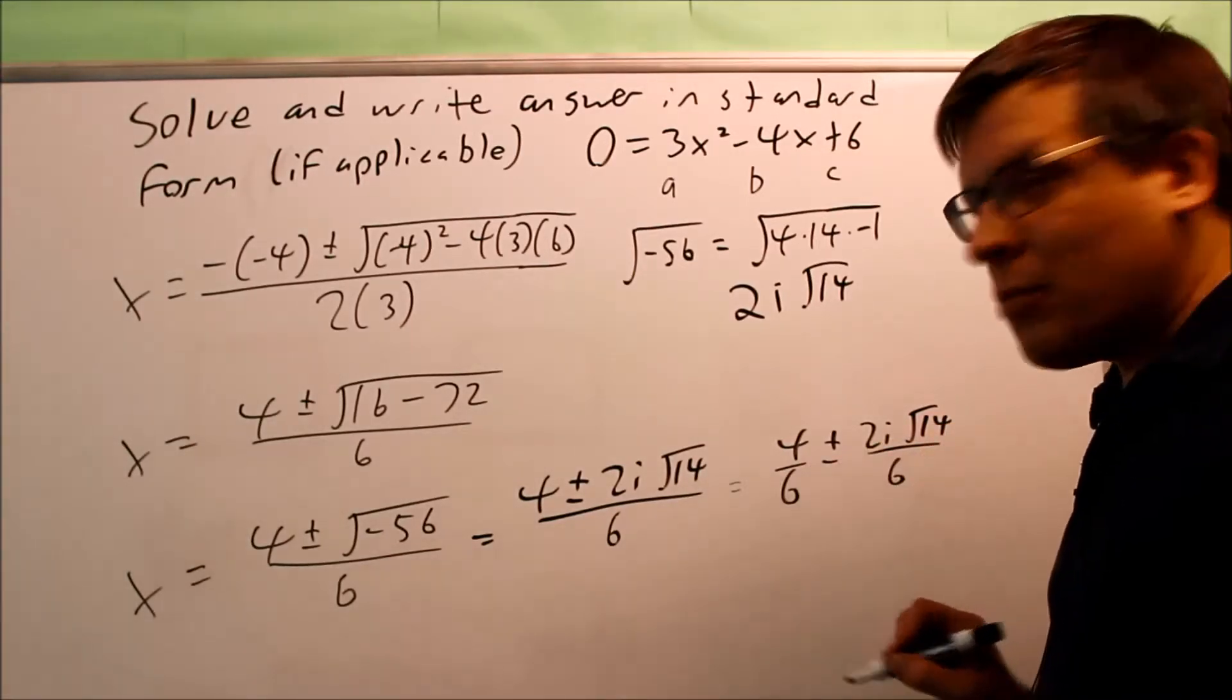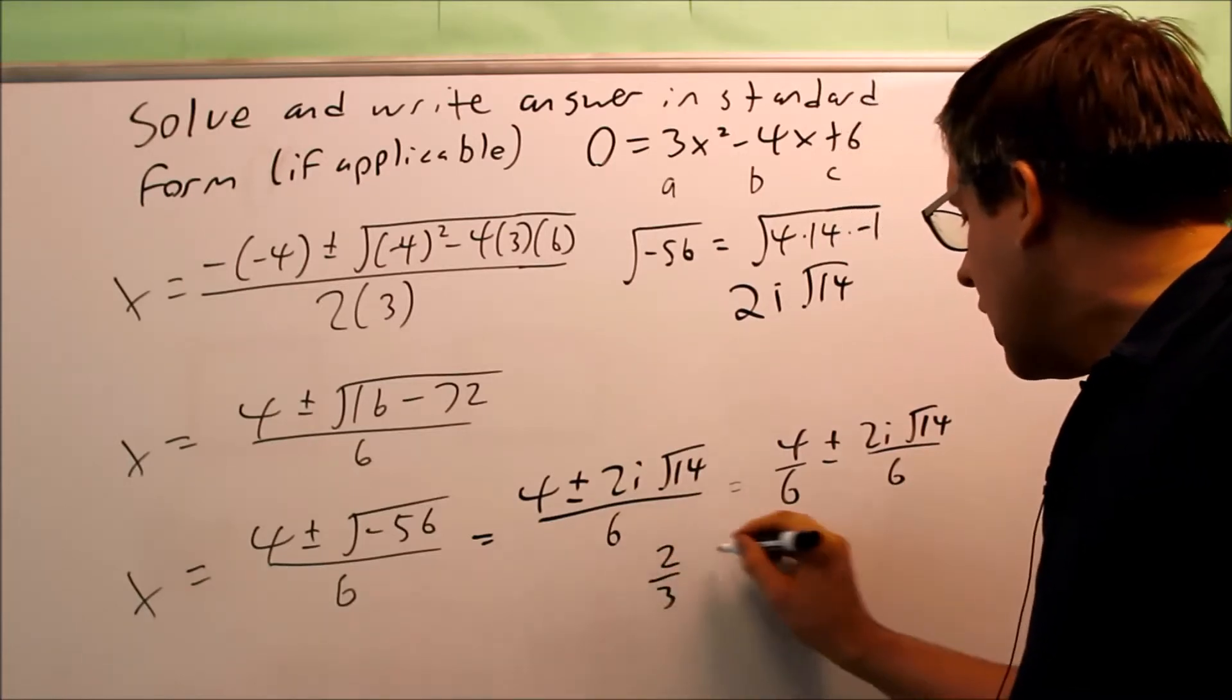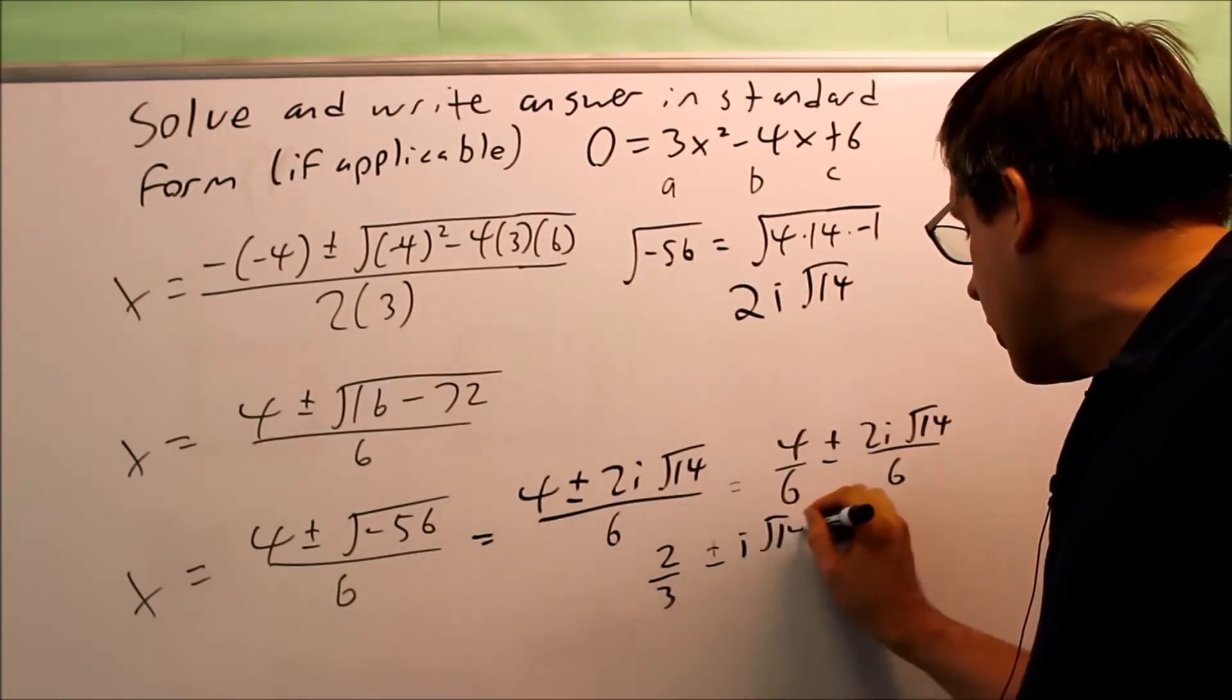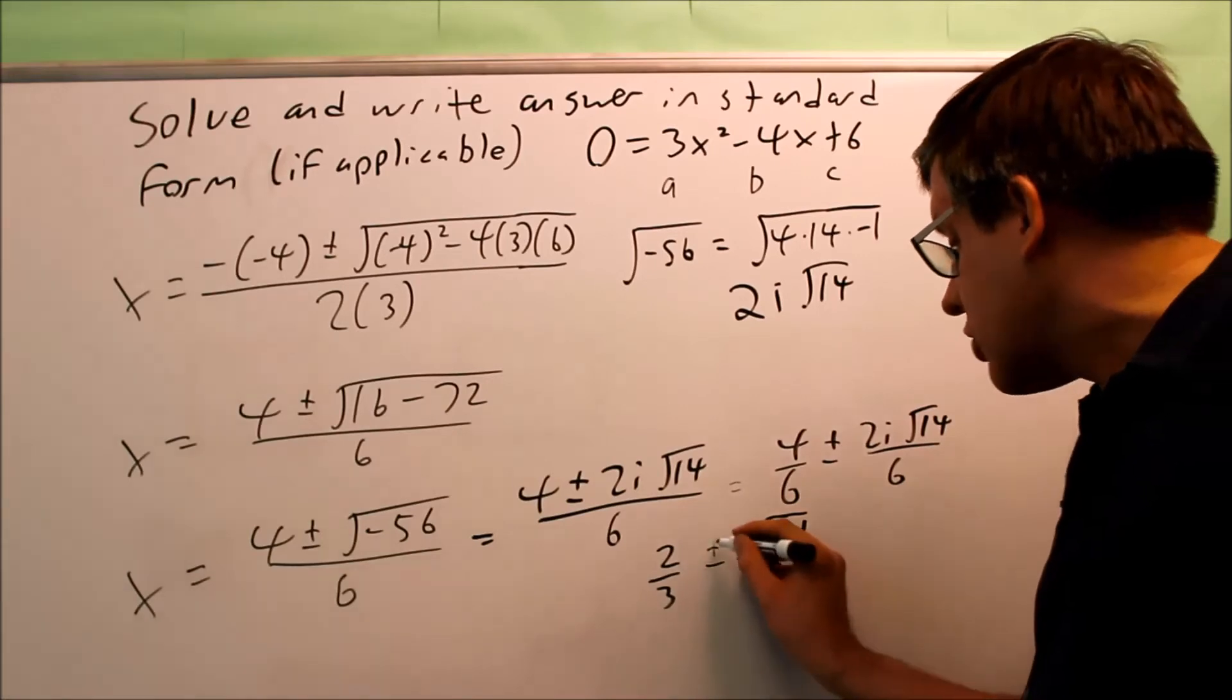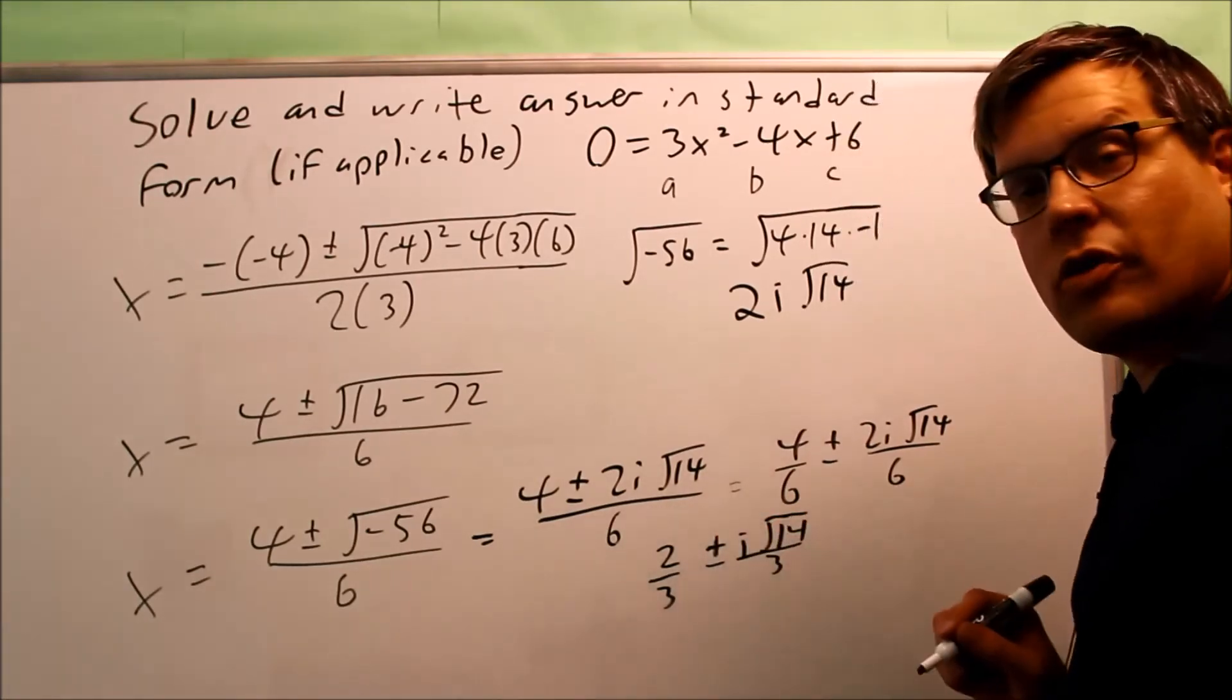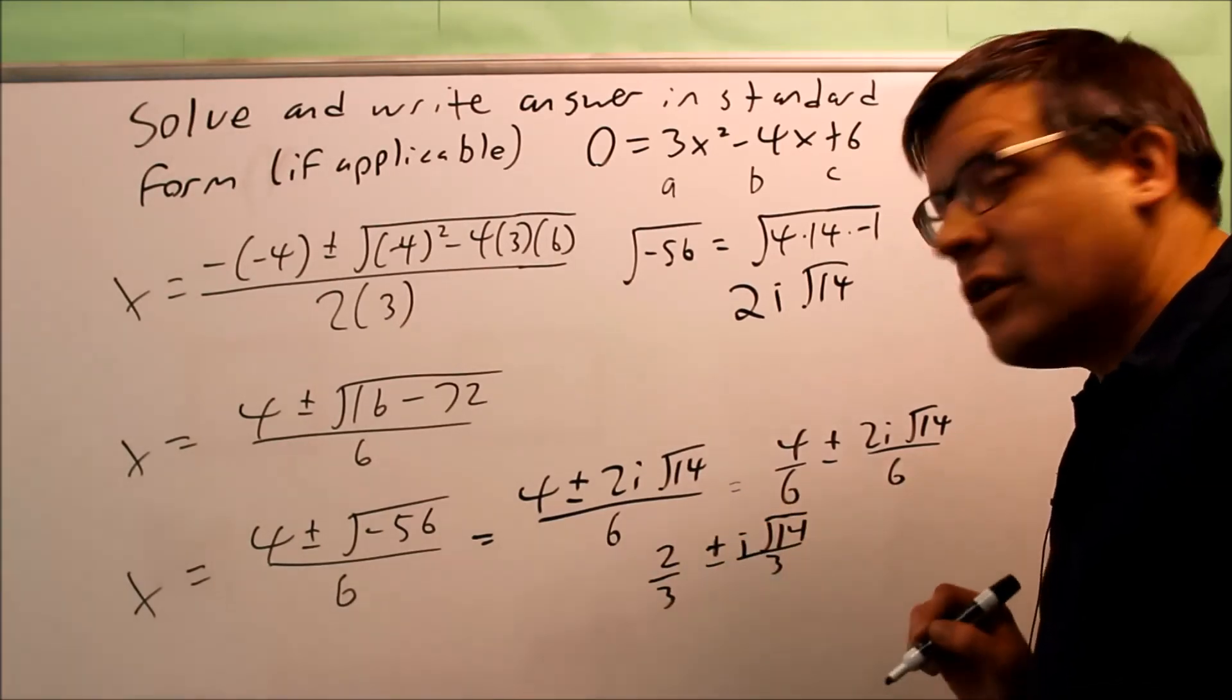I want to break these down separately, so 4 over 6 is going to be 2 thirds, and then I can also break down this one, that's going to be 2 over 6 is 1 third, and so I can write it just like this. So, I get 2 thirds plus or minus i times the square root of 14 all over 3, so this is my a part, and this is the b part there.